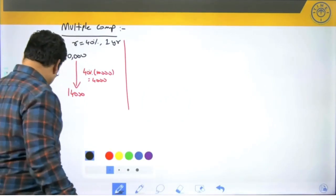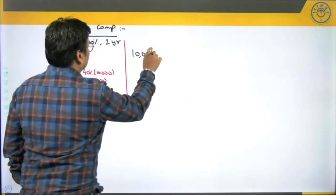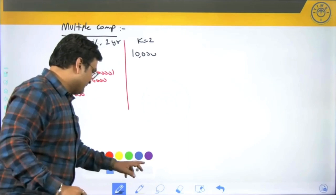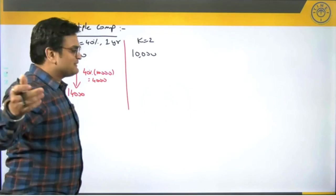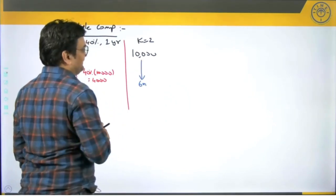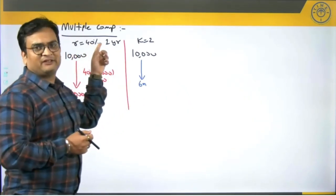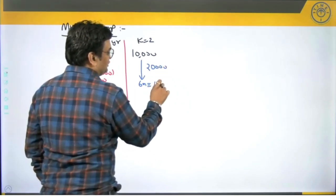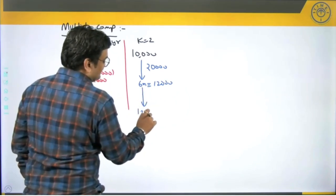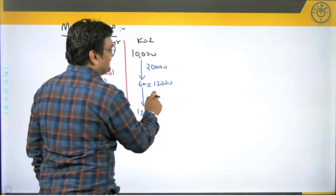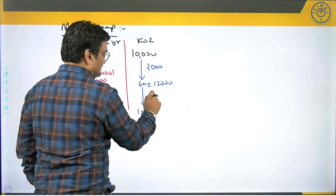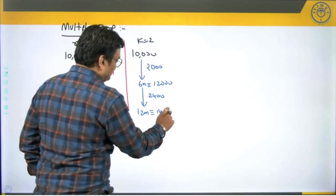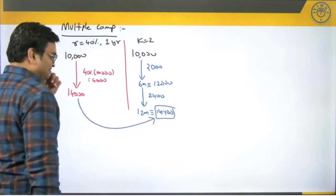Whereas, if you take the same 10,000, same rate of interest, same period, but this time you are compounding twice, the compounding will happen after every 6 months. After 6 months, the rate for that period will be half — 20 percent. So the interest is 20 percent of 10,000 which is 2,000, making the total amount after 6 months 12,000. Again after 12 months, compounding is done at 20 percent: 20 percent of 12,000 is 2,400. So the total interest over the year is 4,400 and the final amount becomes 14,400.